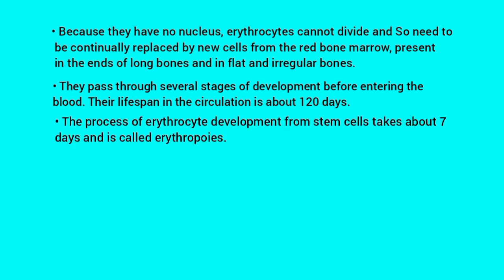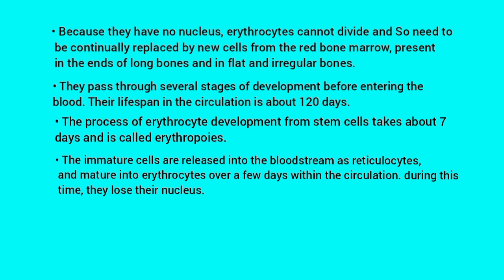The process of erythrocyte development from stem cells takes about 7 days and is called erythropoiesis. The immature cells are released into the bloodstream as reticulocytes and mature into erythrocytes over a few days within the circulation. During this time they lose their nucleus.